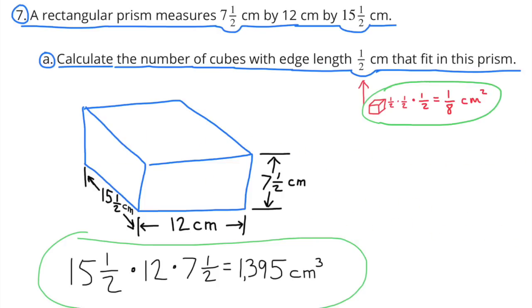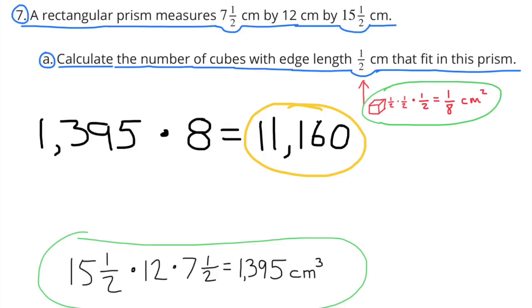This represents the rectangular prism: 7.5 centimeters by 12 centimeters by 15.5 centimeters. It has a volume of 1395 cubic centimeters. Since 8 of those smaller cubes fit into a 1 centimeter cube 8 times, all I have to do is 1395 times 8, and it tells me that you can fit 11,160 of those tiny cubes into the prism.